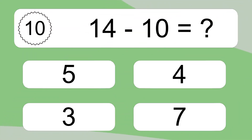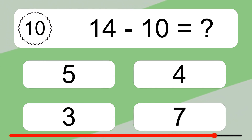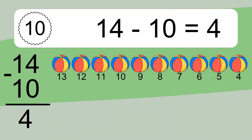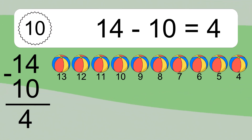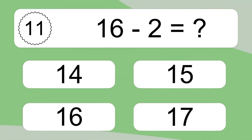14 minus 10 equals what? 14 minus 10 equals 4. Let's count it: 13, 12, 11, 10, 9, 8, 7, 6, 5, 4.